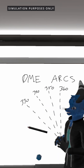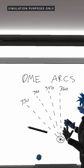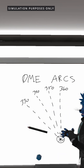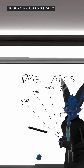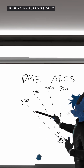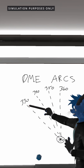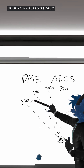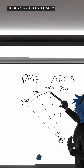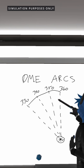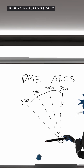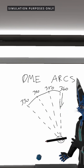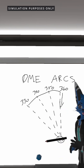Right behind me here I have a very to-scale, very accurate depiction of what a DME arc is going to look like. We're going to start our arc from the 330 degree radial from this nondescript VOR and we're going to track it to the 360 degree radial and then fly inbound to the VOR itself.